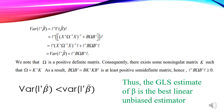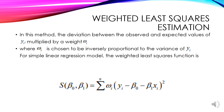We conclude that variance of L'beta hat is less than the variance of L'beta tilde. Therefore, the Generalized Least Squares Estimator of beta is the Best Linear Unbiased Estimator (BLUE). That's all about the Generalized Least Squares Estimator.